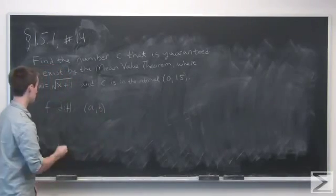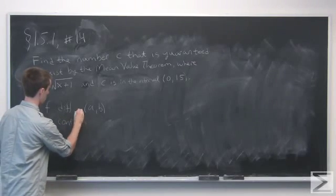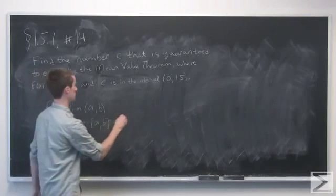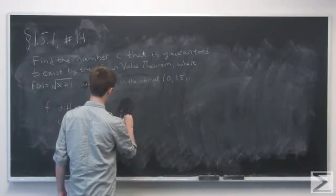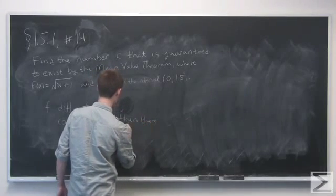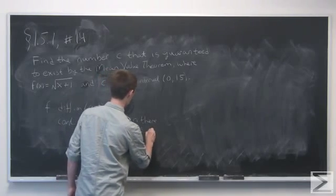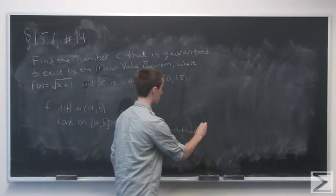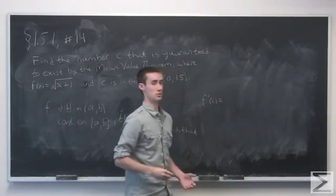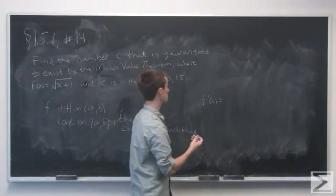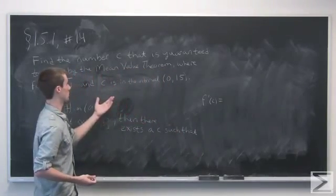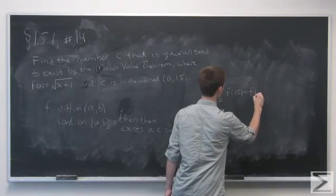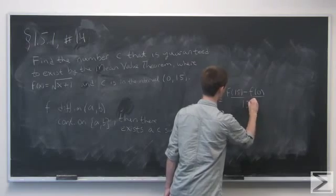and continuous on the same interval but closed, then there exists a number c such that f prime of c is equal to the average rate of change on this interval. The average rate of change on our interval is going to be on 0 to 15, so we're looking at f of 15 minus f of 0, over 15.